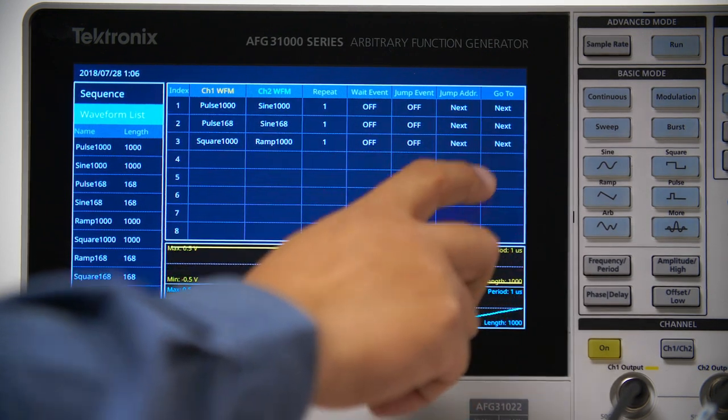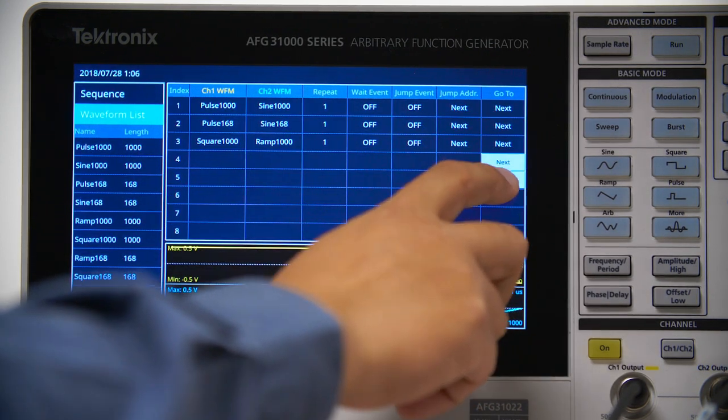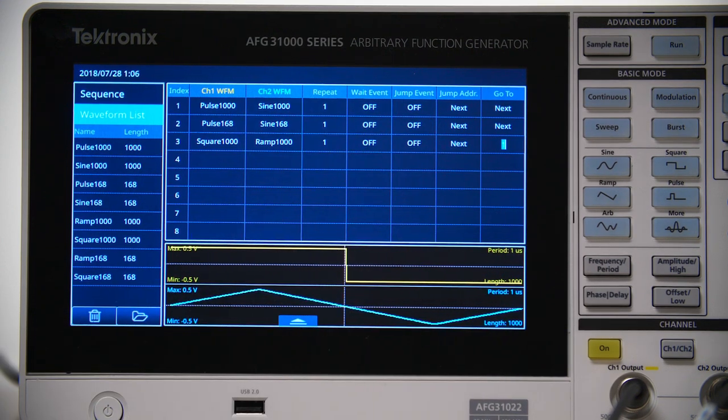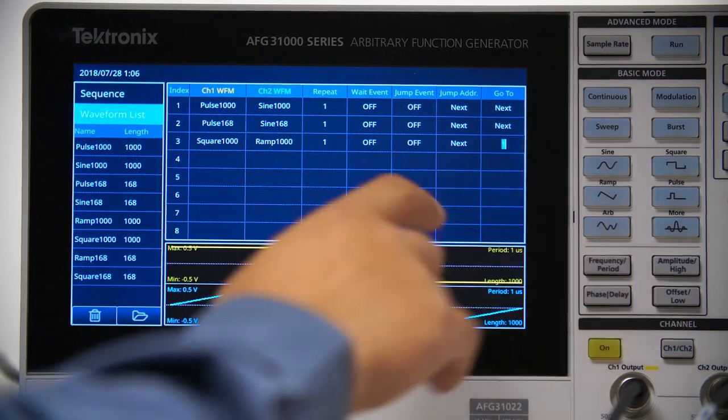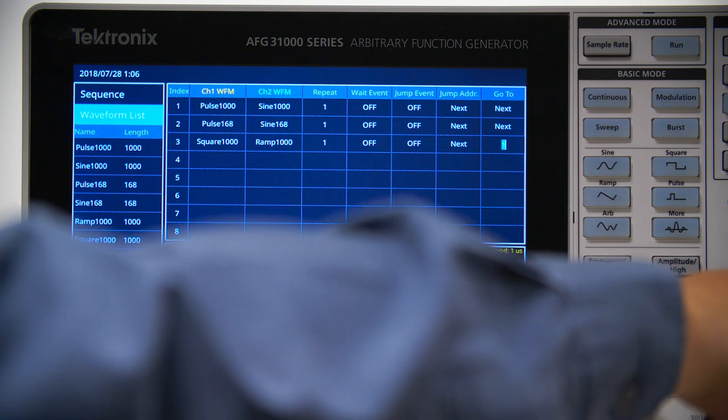Click the Go To field of the last entry and change it from Next to 1. This will let the sequence go back to the first entry after it is finished.